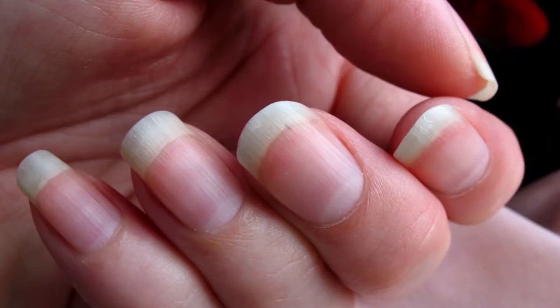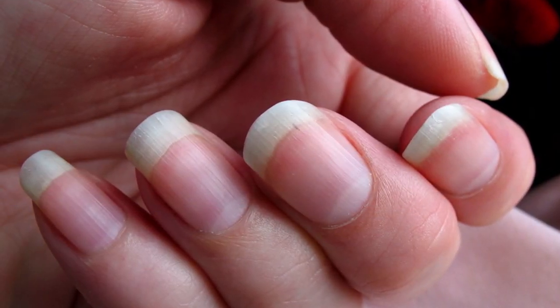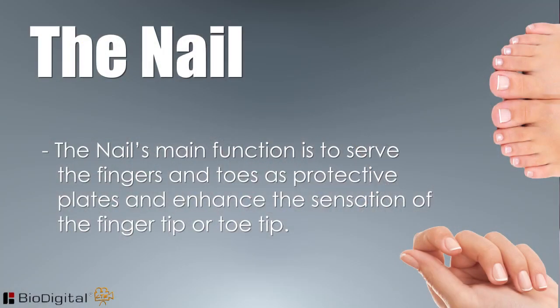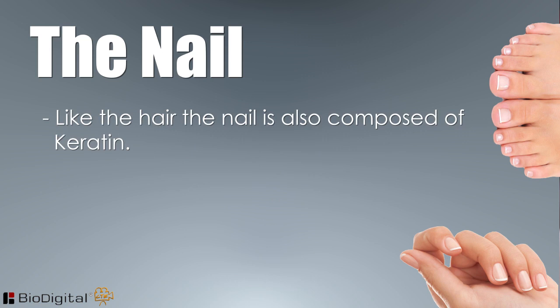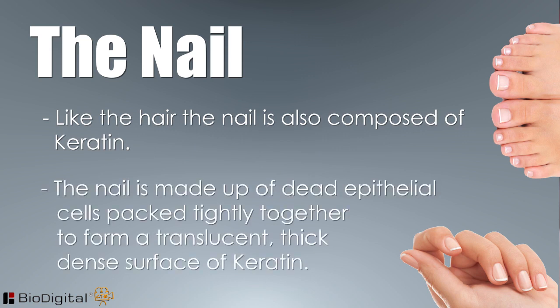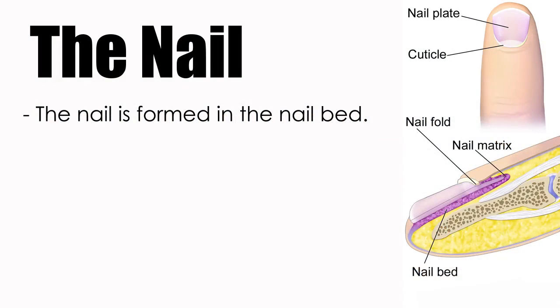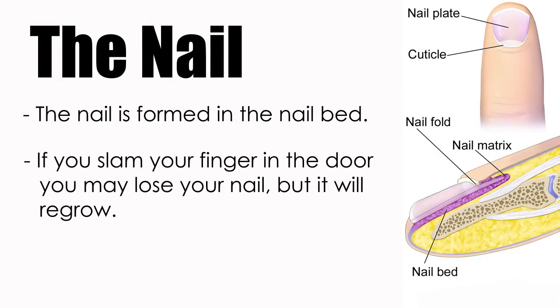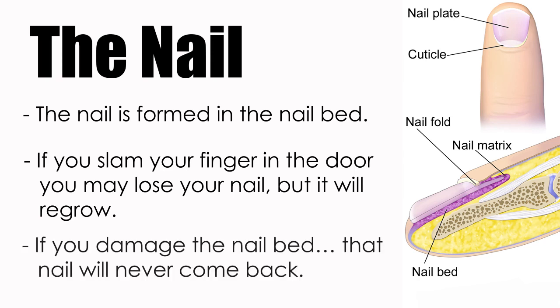The third major part of the integumentary system is the nail. The nail's main function is to serve the fingers and toes as protective plates and enhance the sensation of the fingertip or toe tip. Like the hair, the nail is also composed of keratin — primarily made up of dead epithelial cells packed tightly together to form a translucent, thick, dense surface of keratin. The nail is formed in the nail bed. If you slam your finger in the door, you may lose a nail, but it will regrow. If you damage the nail bed, however, that nail will never come back.